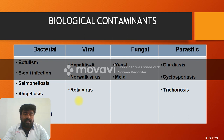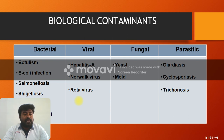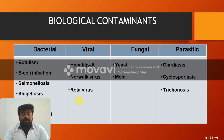The biological contaminants include bacteria, viruses, fungi, and parasites. Bacteria cause botulism, E. coli infection, and Salmonellosis. Viral infections include Hepatitis A and Rotavirus. Fungi cause yeast and mold infections. Parasitic infections include Giardiasis, Cyclosporiasis, and Trichinosis.